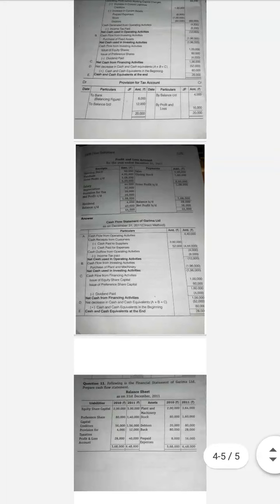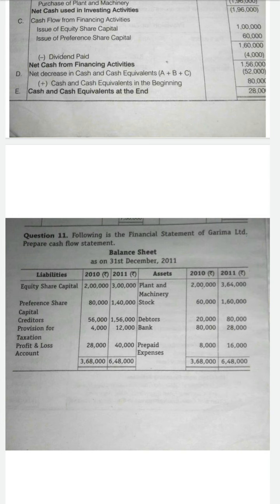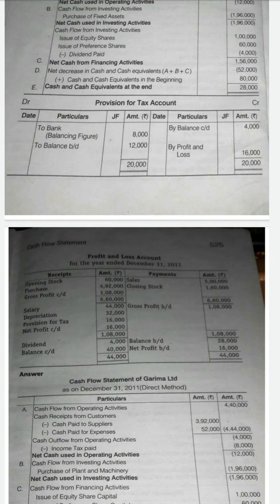The provision for taxation is on the liability side, so it is a credit balance. The opening balance will appear on the credit side and the closing balance on the debit side. In the provision for taxation account, the opening balance of 4,000 is on the credit side as 'by balance brought down' and the closing balance 12,000 as 'balance carried down' — note there is a printing mistake in the book, so write it correctly.